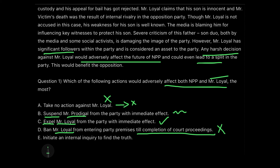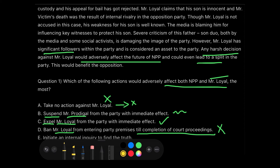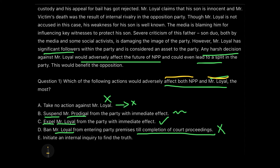Option E is where around 50% of students fail: 'initiating an internal inquiry to find the truth.' This sounds like the most logical, most ethical, and best answer — because an internal inquiry would reveal the truth and action could be taken accordingly. But if we go back to the question, they are NOT asking which is the best course of action. They are asking which action would adversely affect both NPP and Mr. Loyal. Setting up an internal inquiry is not going to negatively affect the party, nor Mr. Loyal if he is not proven guilty. So this is the most logical answer but not the required one here.